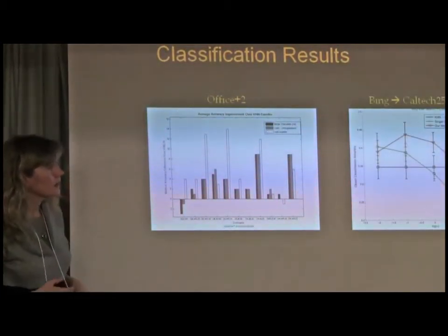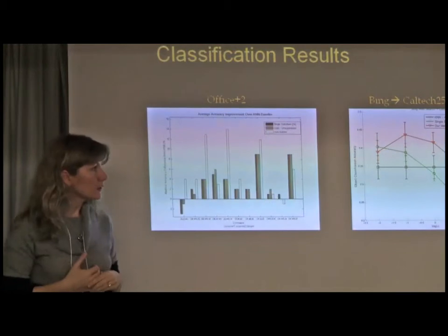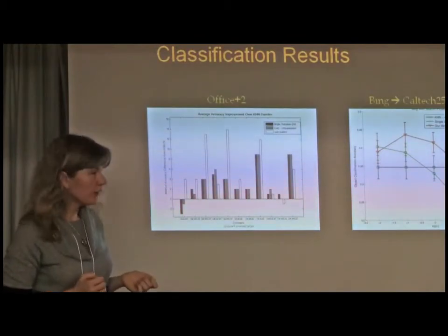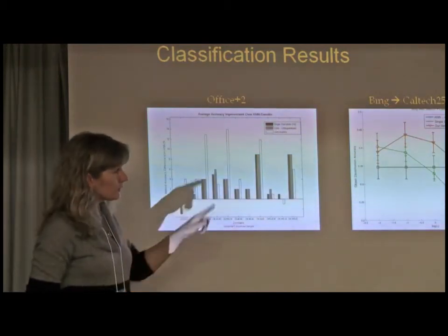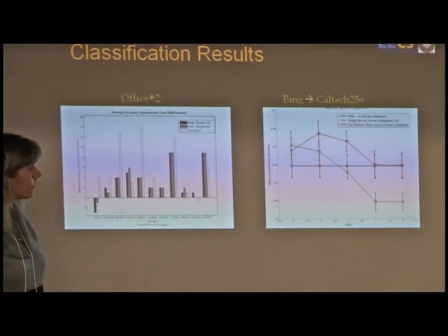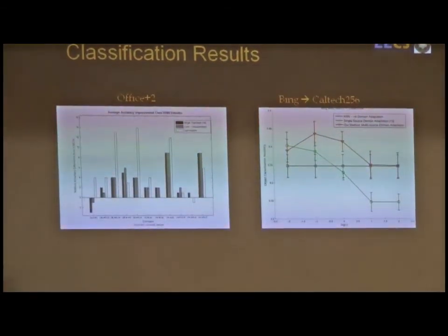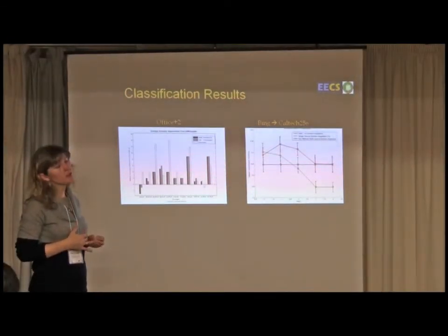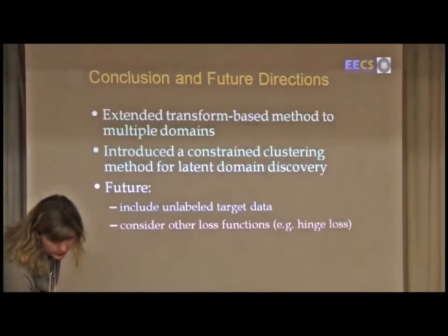Here are some results on the Bing Caltech 256. Here we're training on the web search data and testing on the Caltech 256 data. The X axis here is showing some parameter that we can vary that controls how much we want to optimize the loss function. And so the red is our method, and we're doing better than the baseline method.